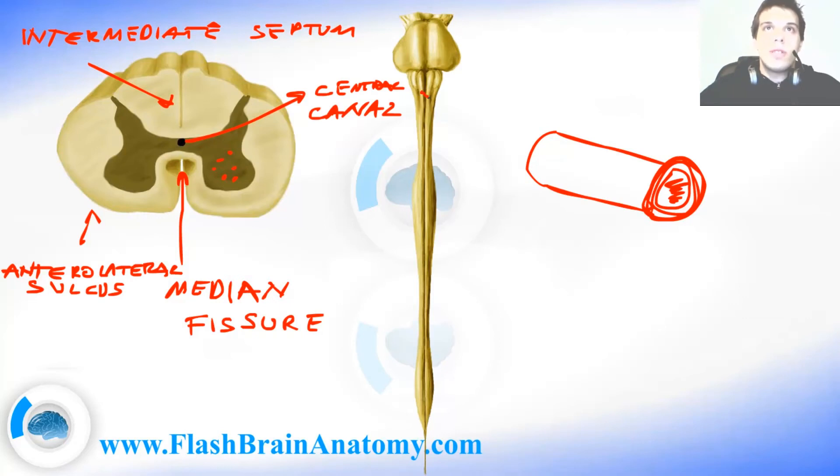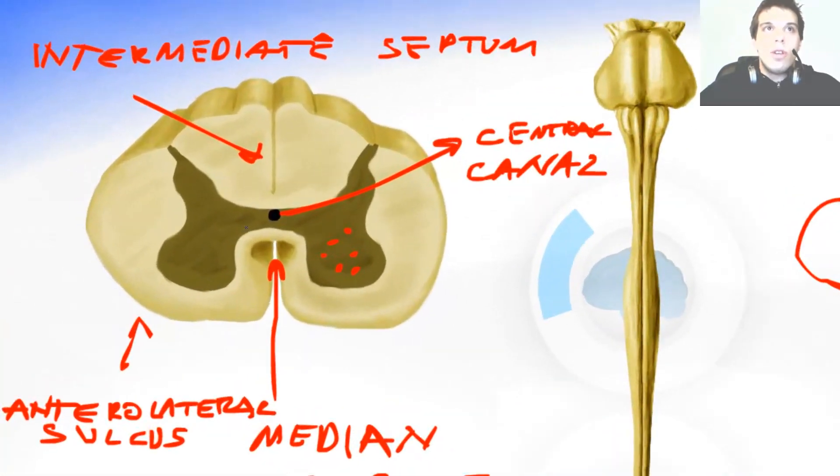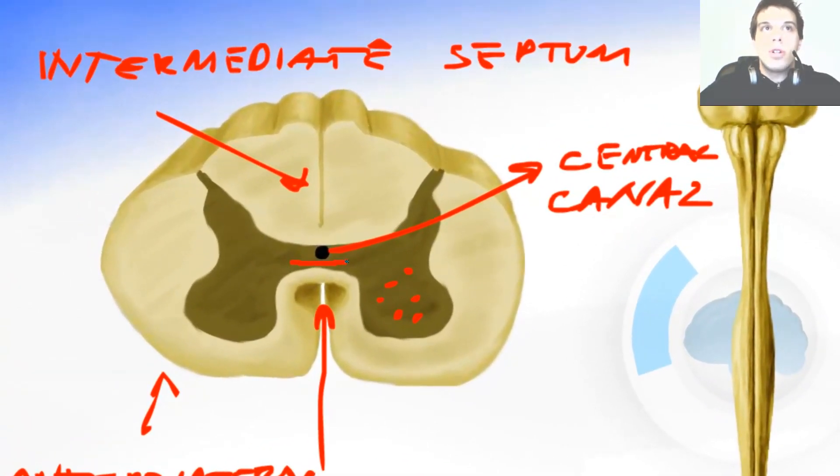Now I explained you recently about the crossing fibers in the decussation of pyramids. But along the whole length of the spinal cord there are nerve fibers that cross sides and we call these the commissures. So over here you can see the gray commissure and the white commissure. This is the place where the sides exchange fibers.